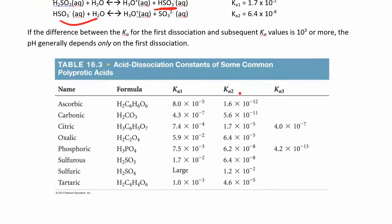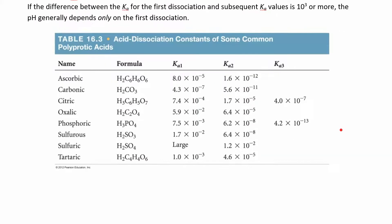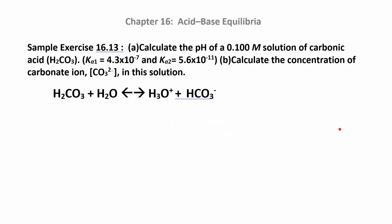With polyprotic acids you're going to have more than one Ka — that's how you'll know when you have these. You'll also see more hydrogens out front. K1 is always going to be a lot bigger than K2. The trick with these problems is that you have to make two ICE tables — a double ICE table. So let's try one of these problems.